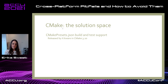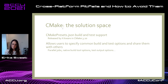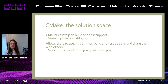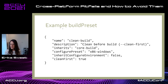Presets support inheritance — so you can inherit from another configure preset. You can set your architecture, which is the same as passing -A from the command line. In CMake 3.20, my team at Microsoft worked closely with Kitware to contribute support for build and test presets. So as of CMake 3.20, there are three kinds of presets: configure presets, build presets, and test presets. Build and test presets allow users to specify common build and test options and share them with others, with fields mapping directly to command line options like parallel jobs, native build tool options, and CTest output options.